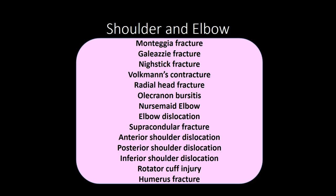Use the mnemonic MUGR to distinguish Monteggia and Galeazzi fractures: Monteggia is an ulnar fracture with radial head dislocation; Galeazzi is a radius fracture with distal radioulnar joint dislocation. Nightstick fracture is a non-displaced ulnar shaft fracture — assess the radial nerve. Volkmann's contracture occurs from inadequate circulation to the forearm, often from a tight cast or swelling, resulting in forearm pronation, wrist flexion, and paralysis of the intrinsic muscles.